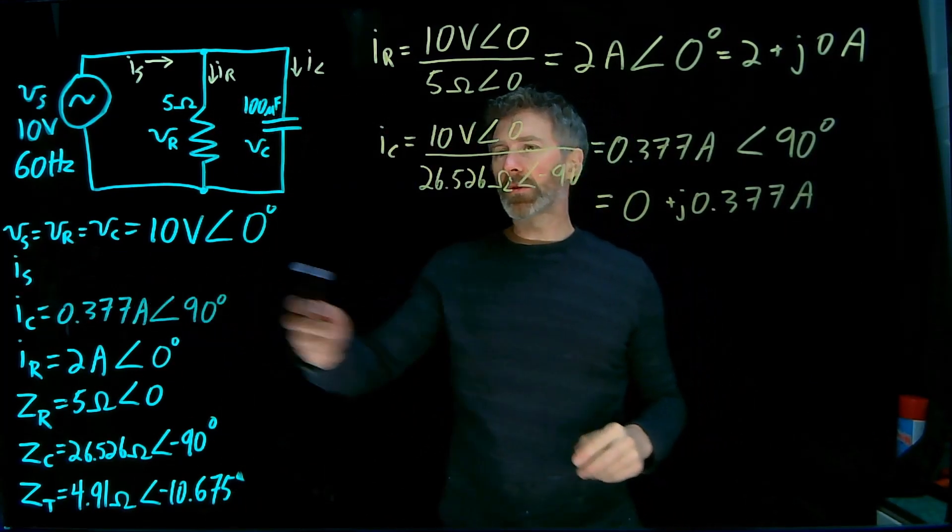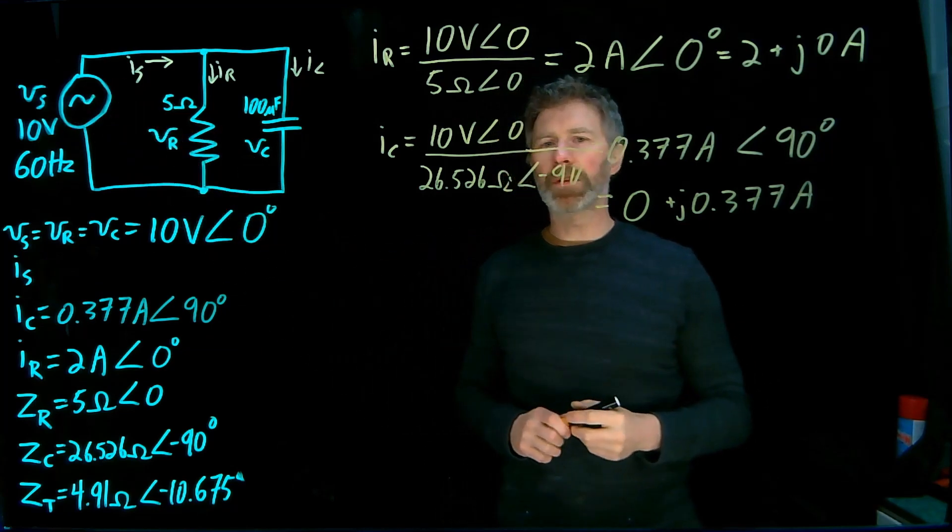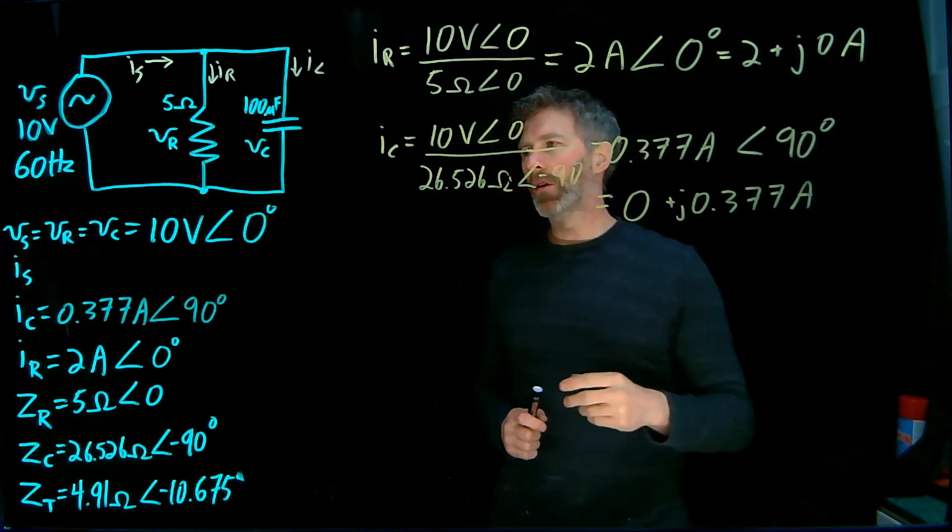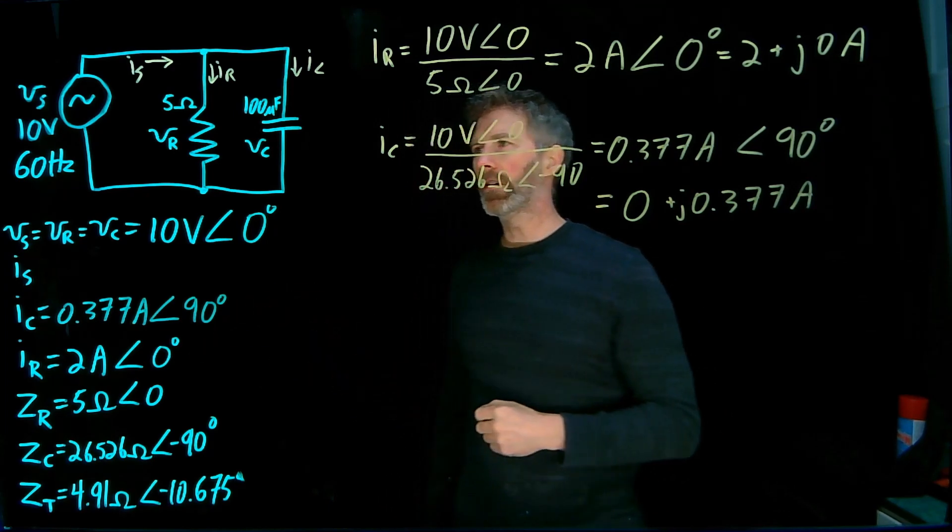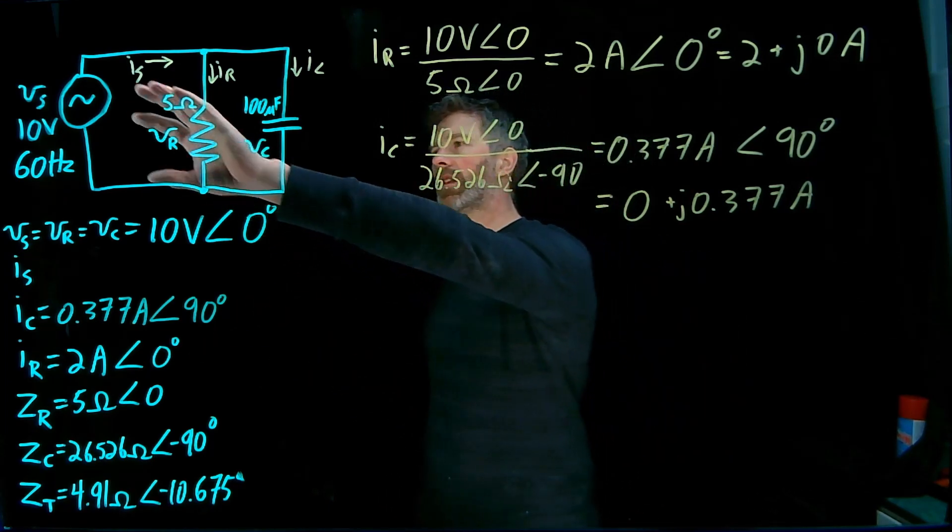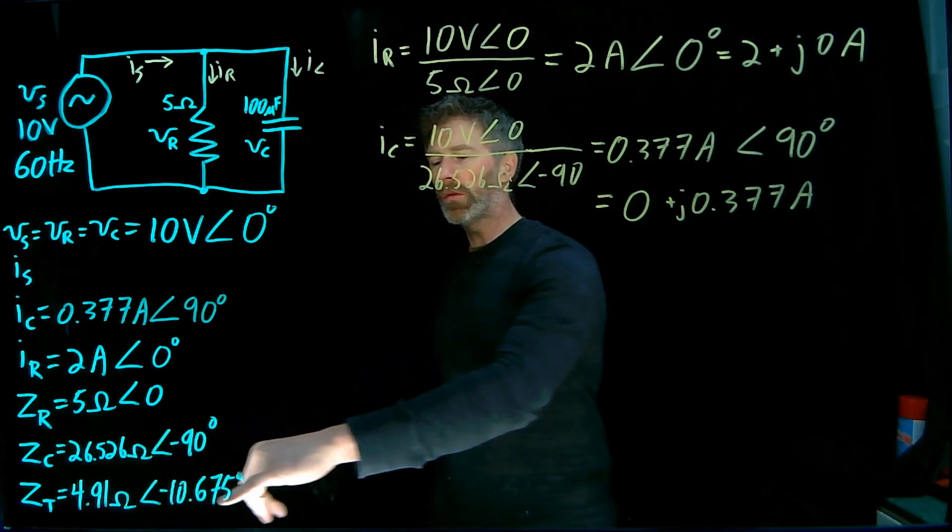And finally, that source current, that total current coming from the source. Two ways of calculating it. One, I can use Kirchhoff's current law and add these two values together. Or I can use the total voltage over the total impedance. And I'll do it both ways here.